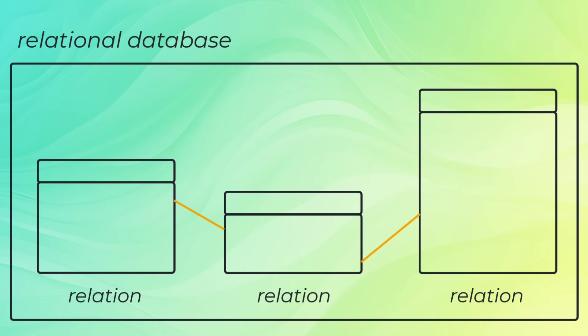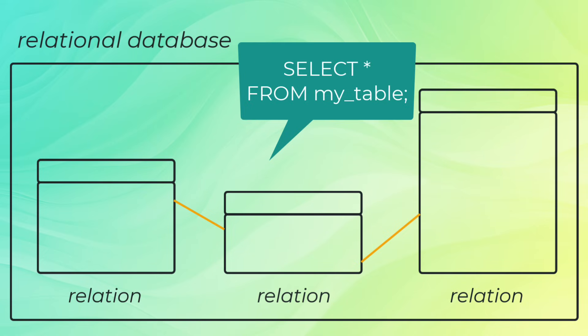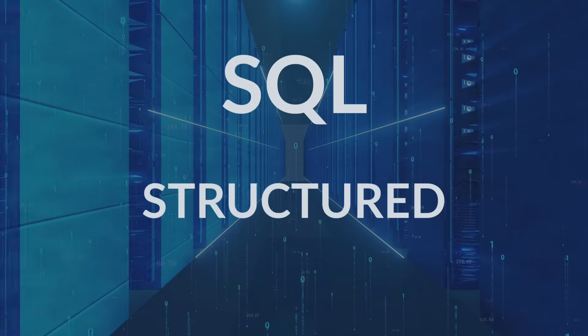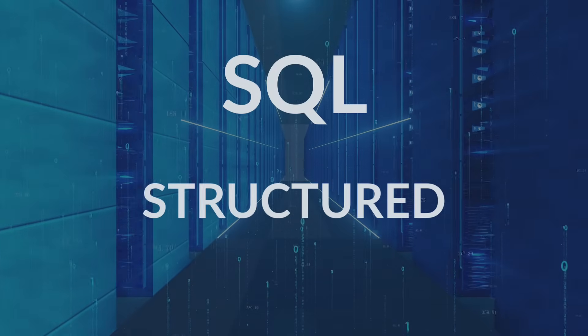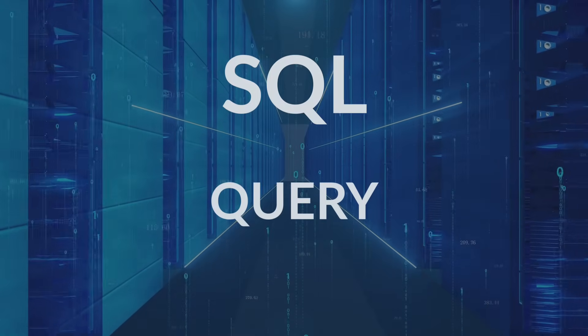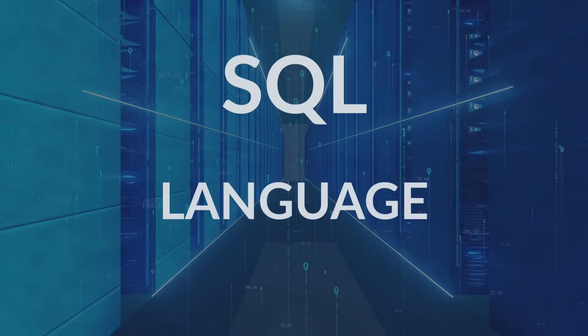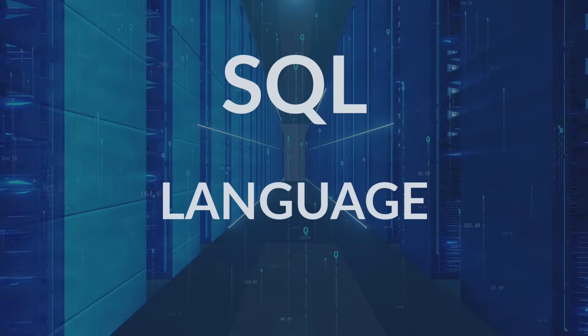Now to interact with a relational database, you can ask queries to return the information that you want. These queries take the format: SELECT * FROM my_table. In English, this is saying: show me all the data within my table. Bringing it all together, you now know each part of the SQL acronym. S stands for structured, and it refers to the highly structured way that data is stored in relational databases. Q is for query, which refers to the way that you can ask the database to return data to you. And finally, L stands for language, which refers to the SQL syntax that we'll be introducing in this video.